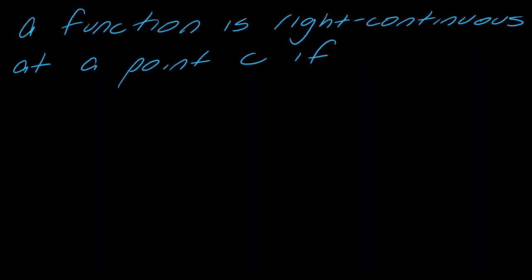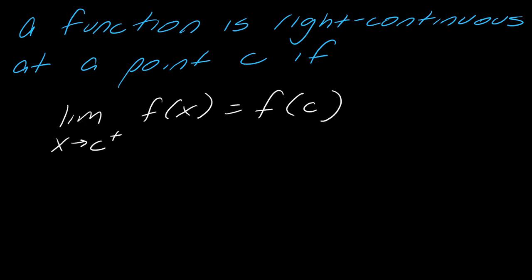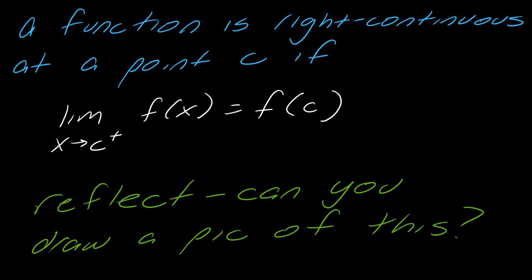Now let's talk about what it means to be right continuous at a point C. The definition here would be the limit as x approaches C from the right of f of x is equal to f of C. What I want you to try to do now is think about what would make something right continuous versus just continuous in general. It's going to be different from the last picture. You might want to pause and just mull this over for a moment.